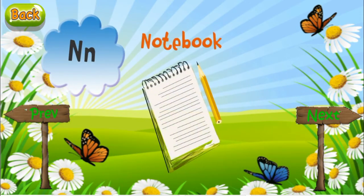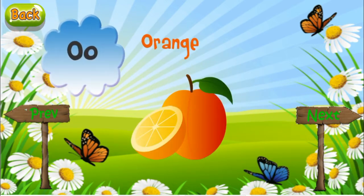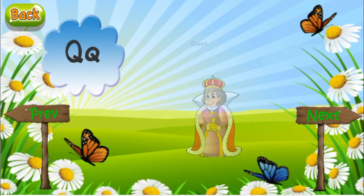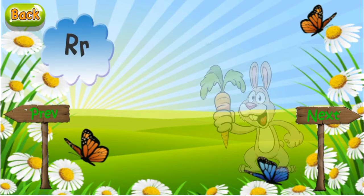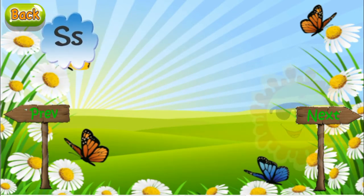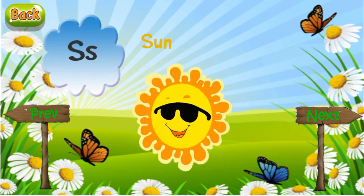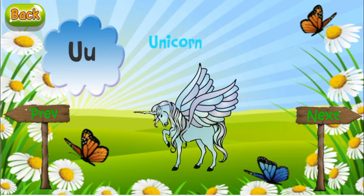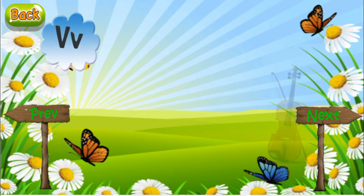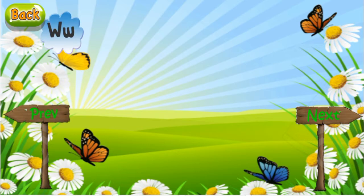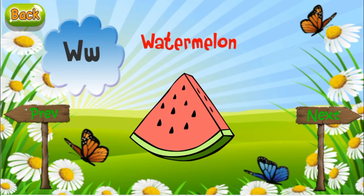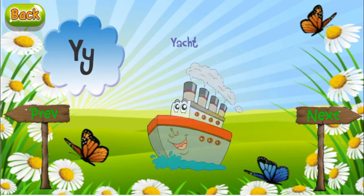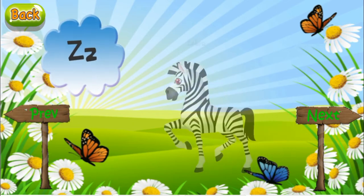N is for notebook. O is for orange. P is for pig. Q is for queen. R is for rabbit. S is for sun. T is for turtle. U is for unicorn. V is for violin. W is for watermelon. X is for xylophone. Y is for yacht. Z is for zebra.